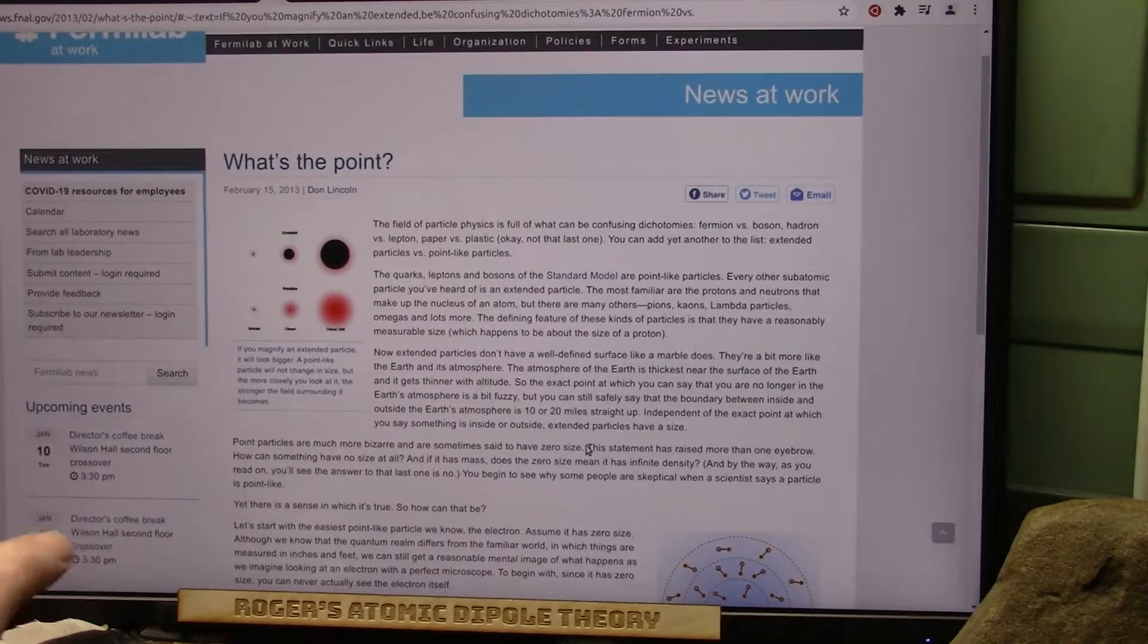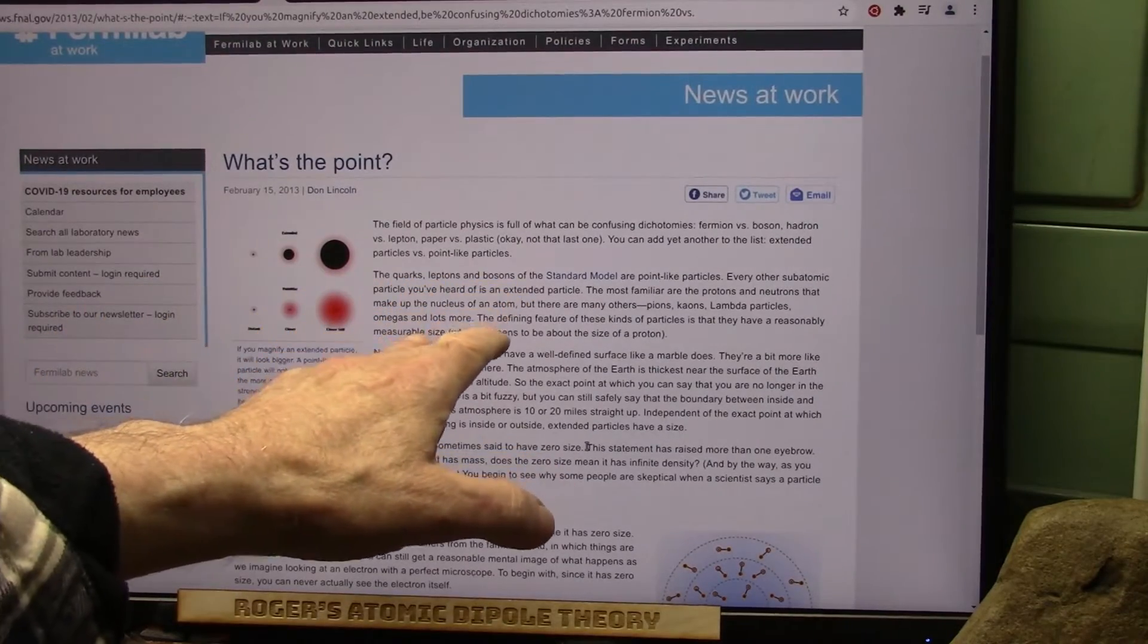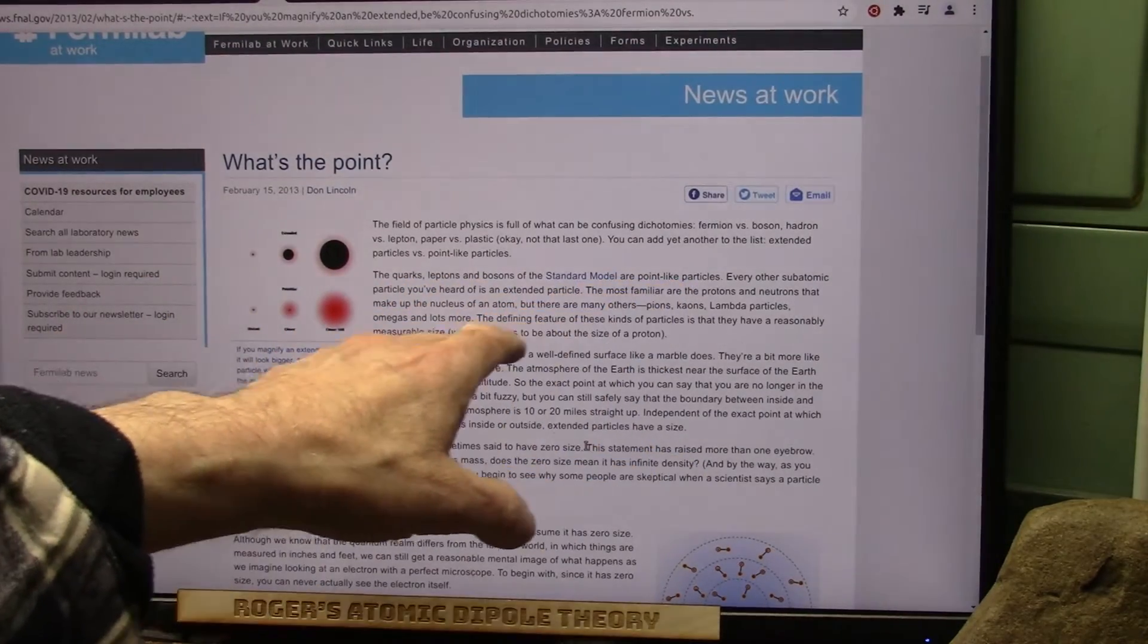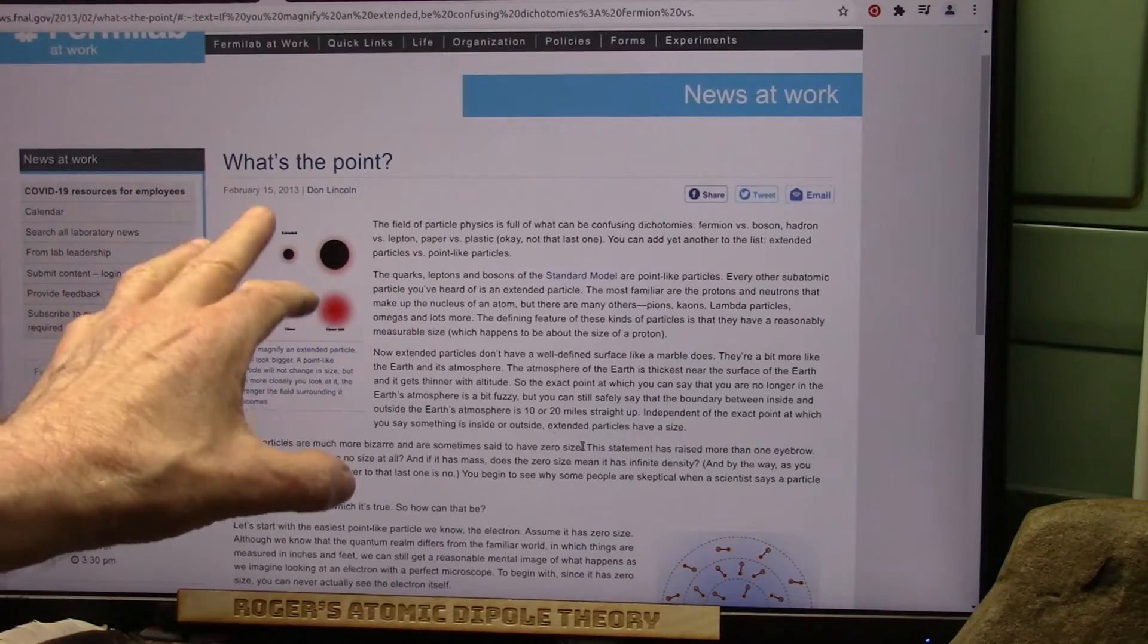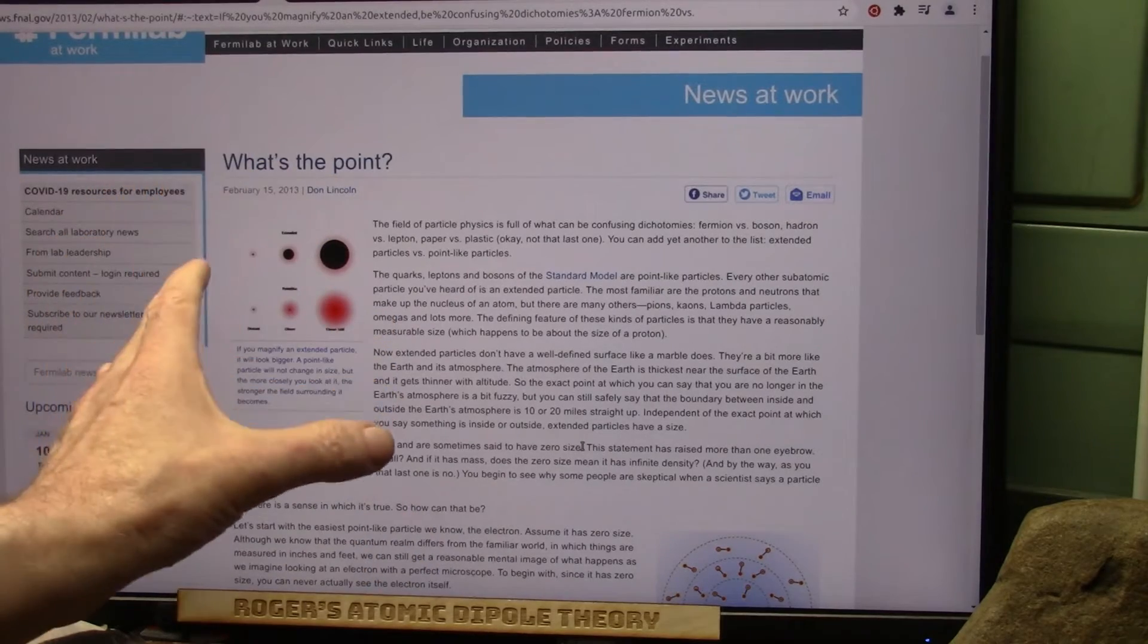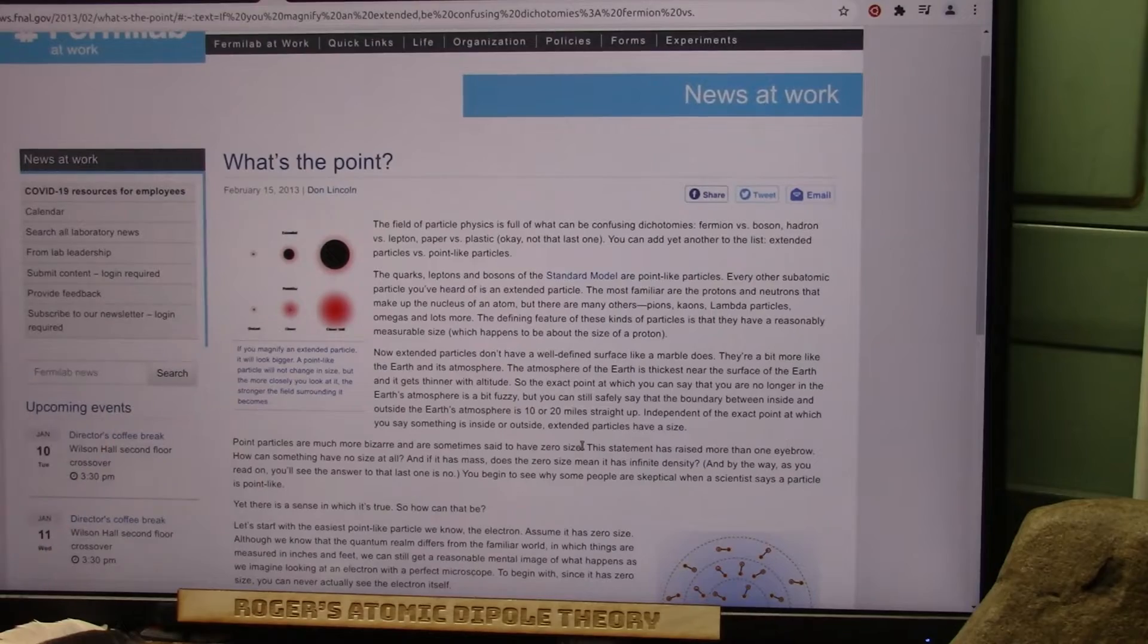He's explaining that the standard model shows point-like particles and fixed particles. He's found them, but I'm not sure they really understand them within the standard model.